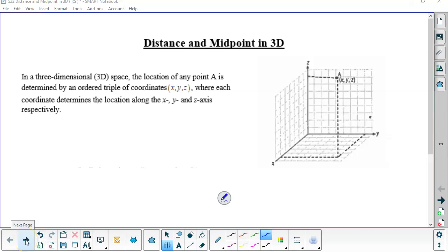So we learned distance and midpoint in two dimensions, so now we're doing it in three dimensions. Take a look at how these axes are oriented. Your x is like it's coming out of the paper, your y is horizontal, so where normally x was, and z is vertical, where normally y was.